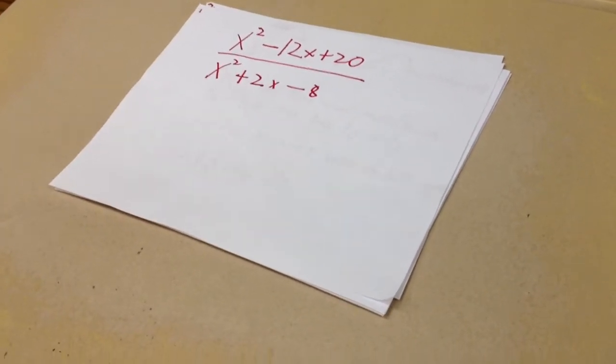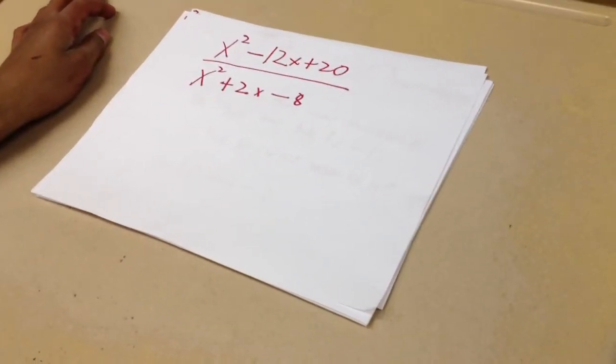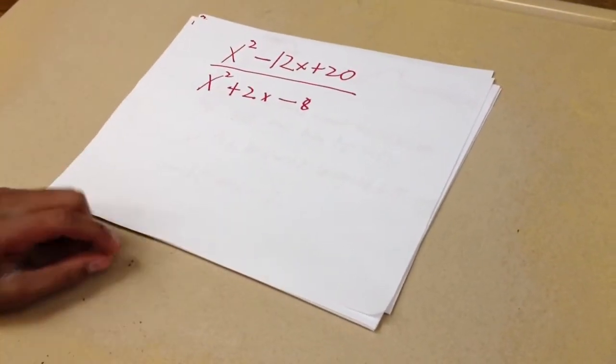Hi, my name's Freddy, and today we'll be doing the problem x squared minus 12x plus 20 over x squared plus 2x minus 8.